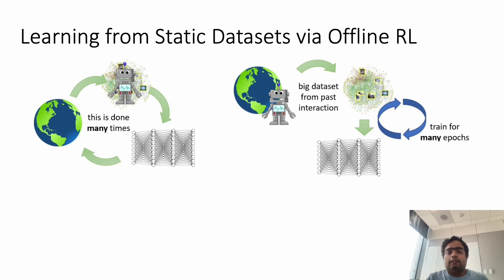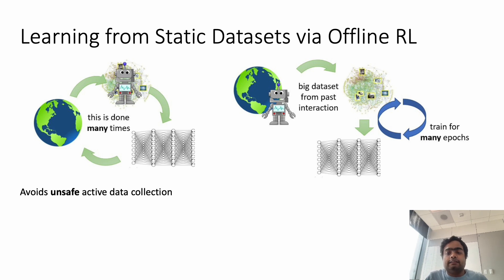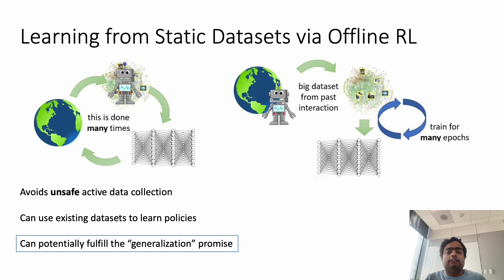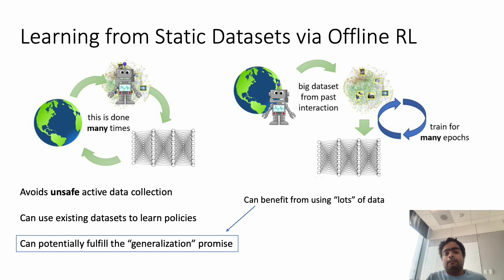In contrast to standard online reinforcement learning, offline RL methods aim to learn from a static dataset of previously collected experience with no additional environment interaction. This avoids the need for any unsafe active data collection and can utilize existing datasets to learn effective policies. Furthermore, offline RL can potentially fulfill the generalization promise by allowing us to train on lots of diverse datasets which are already existing out there without needing to collect them from scratch.